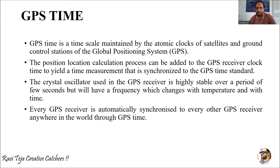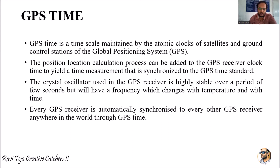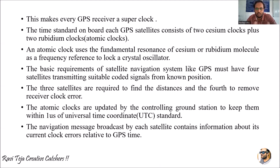Every GPS receiver is automatically synchronized to every other GPS receiver. In several parts of the world there will be several GPS receivers using the same satellite at a single point of time. Every receiver is automatically synchronized to every other GPS receiver anywhere in the world through GPS time — that is why they are considered as super clocks.